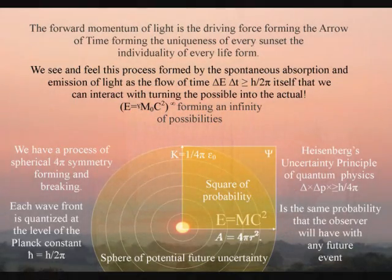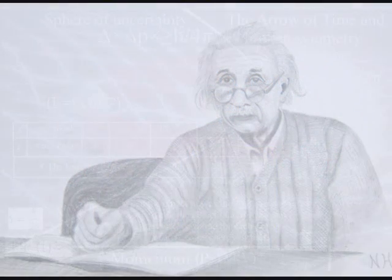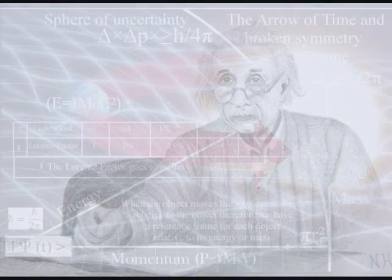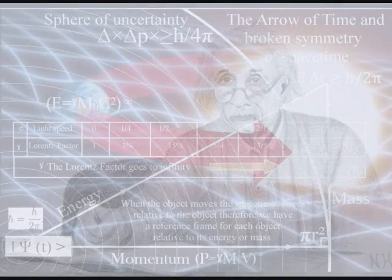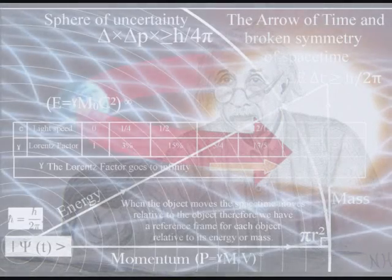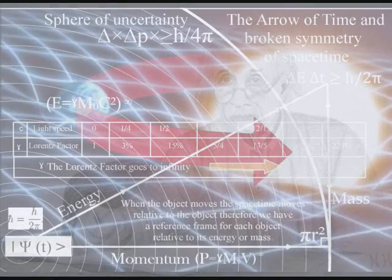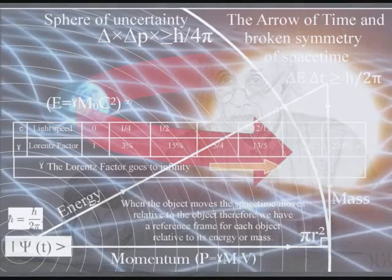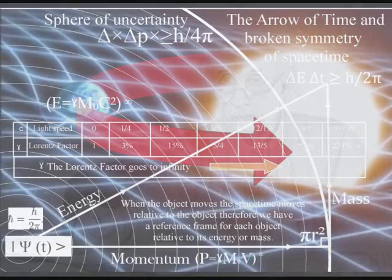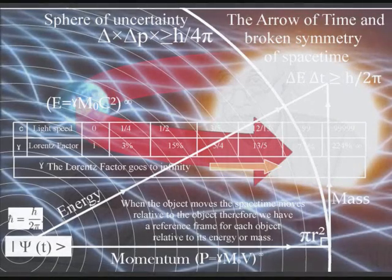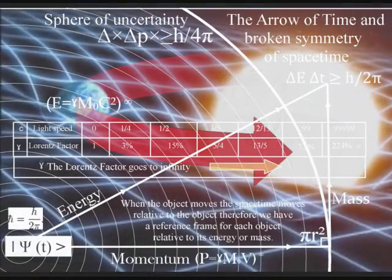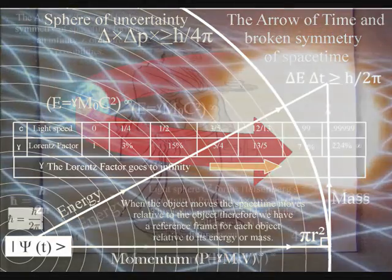This might sound far-fetched, but it is only extending Einstein's relativity to everyday objects and individuals. In the theory of general relativity we have an interactive process: when an object moves, space-time moves relative to the energy and momentum of the object, therefore forming the curvature of space-time.